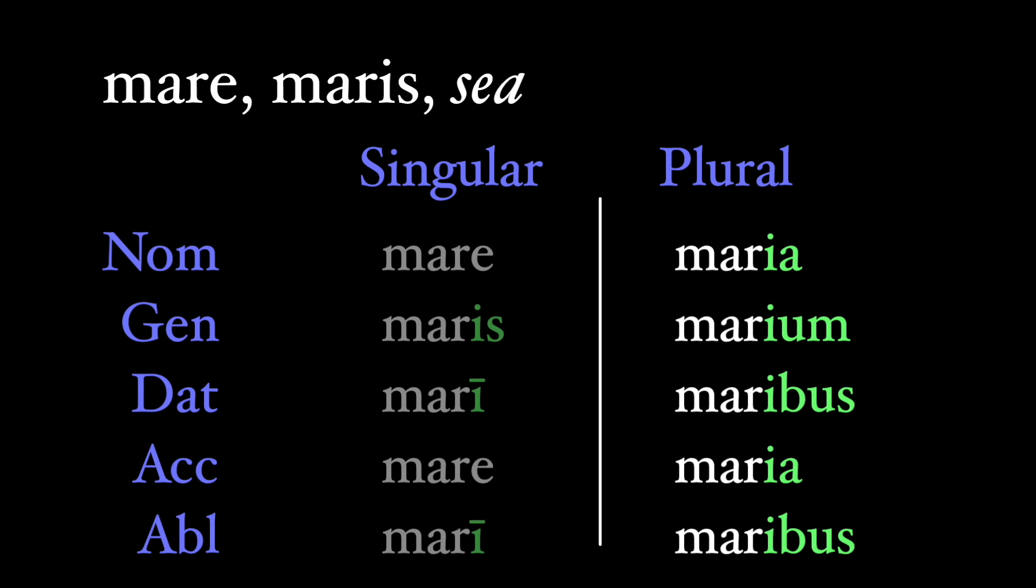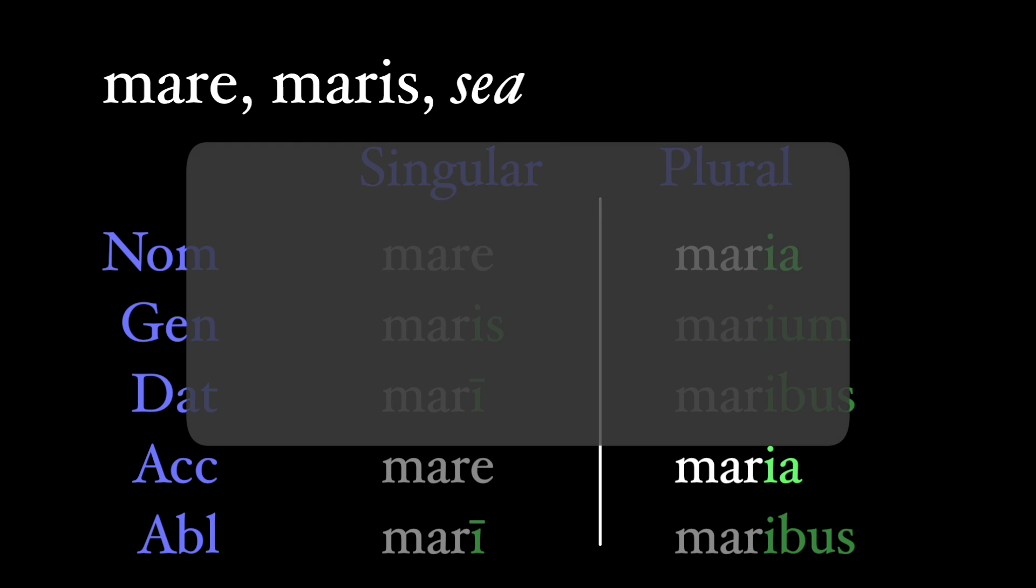In the plural, the I is retained, not just in the genitive plural, marium, but also in the nominative and accusative. So animalia are animals, calcaria, spurs, and maria, seas.